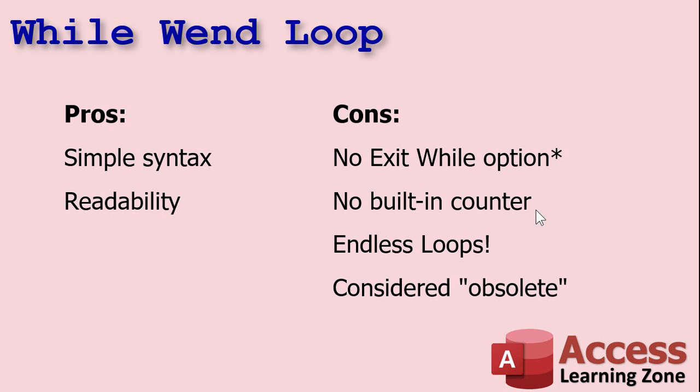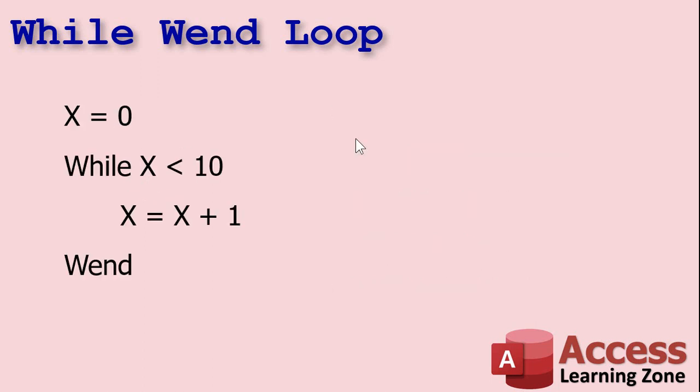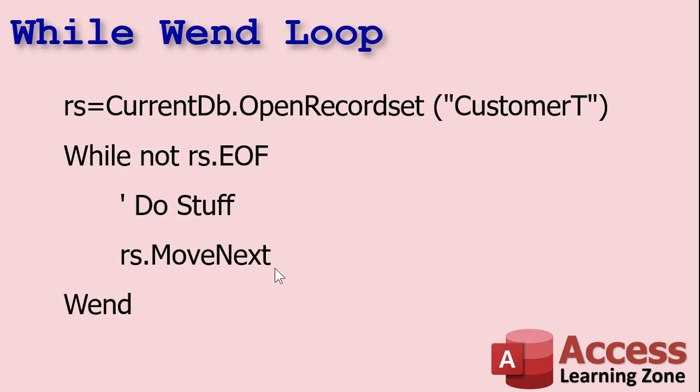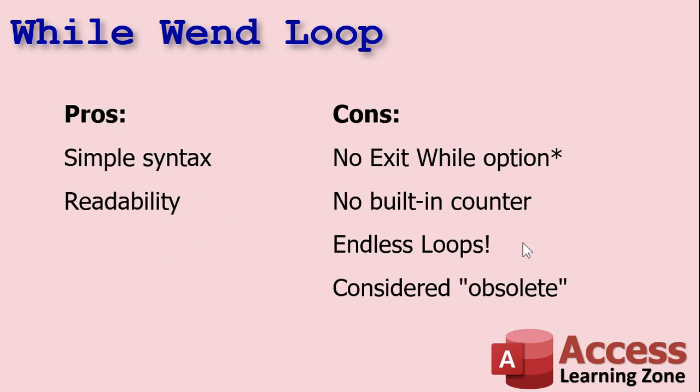All right as we saw there's no built-in counter so if you want a counter variable you got to track and increment it yourself. Endless loops are very possible with while loops. Be careful because if you get stuck in an endless loop your access is going to seem like it froze and it's just sitting there looping. For example if you don't have that x equals x plus one in there or you forget the move next, I do this all the time, that's why whenever I write this I always put the move next before I even start my do stuff because I always forget the move next and then it sits there and it just keeps looping and access looks like it's stuck. And yeah it's considered obsolete by a lot of programmers but you know what I don't listen to them. I still use while loops. It's what I learned, it's how my brain works and they're perfectly fine. I use them in almost all my projects, I teach them in all my classes.